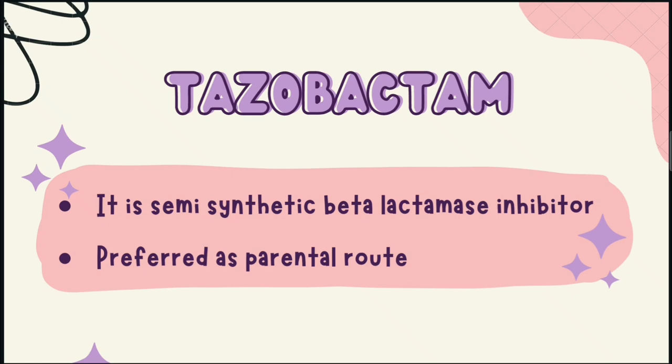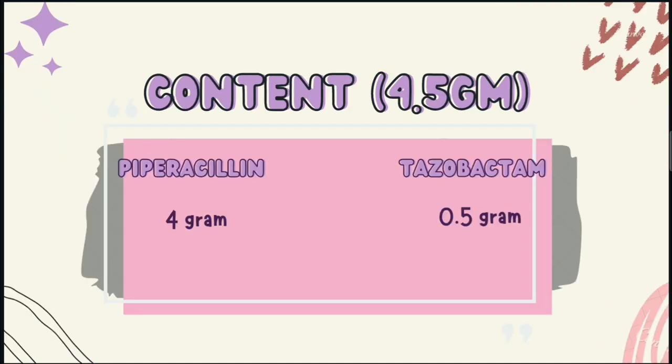Piperacillin is administered along with tazobactam — they are combined and form a very good combination. It consists of about 4.5 grams for persons having weight more than 37 kg, from which piperacillin consists of 4 grams and tazobactam consists of 0.5 grams.